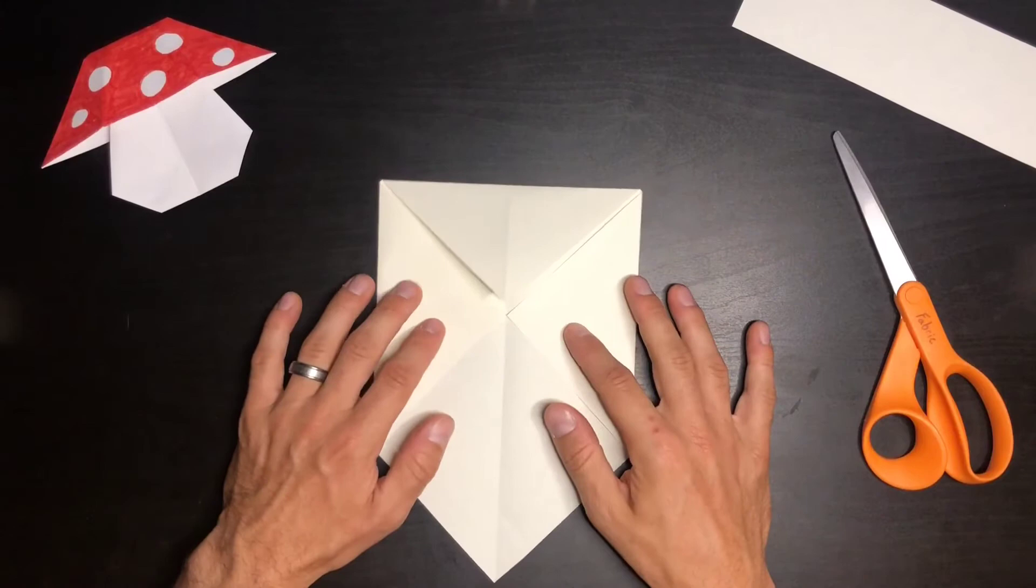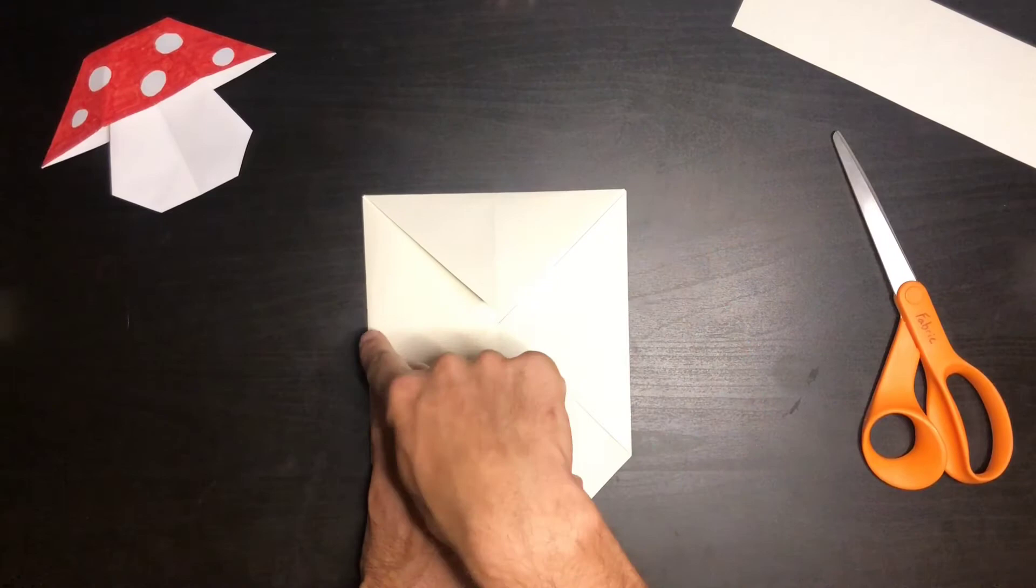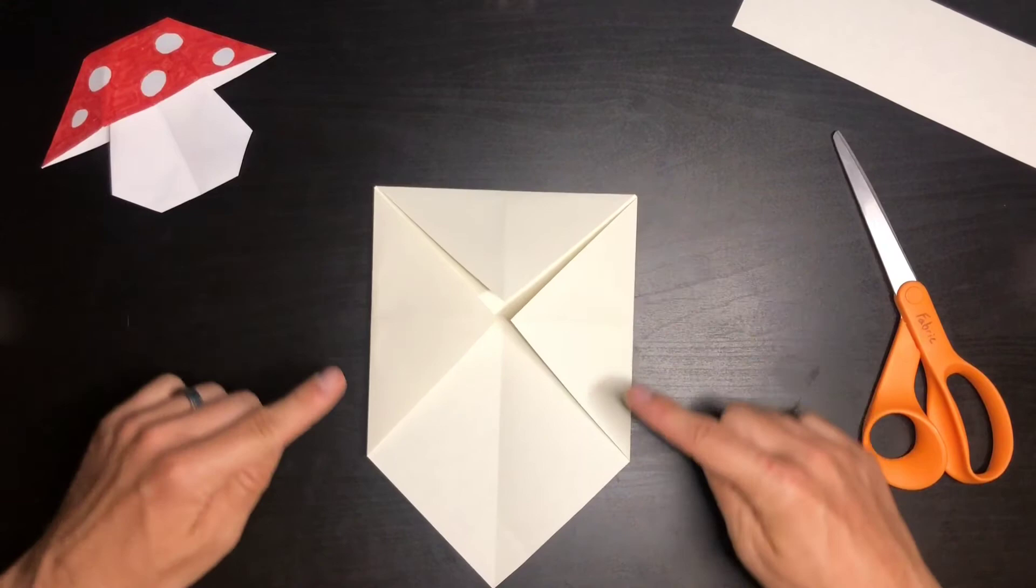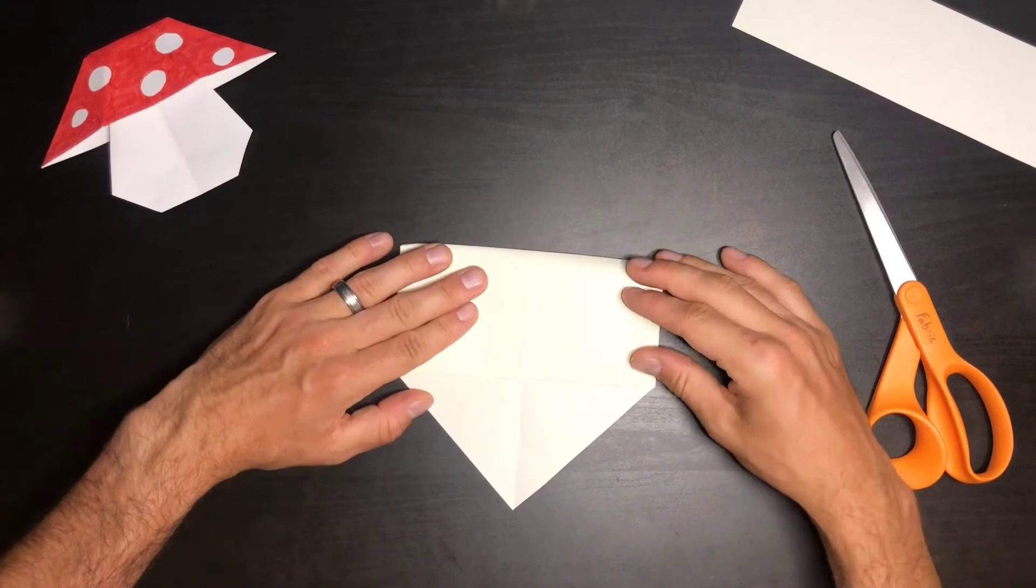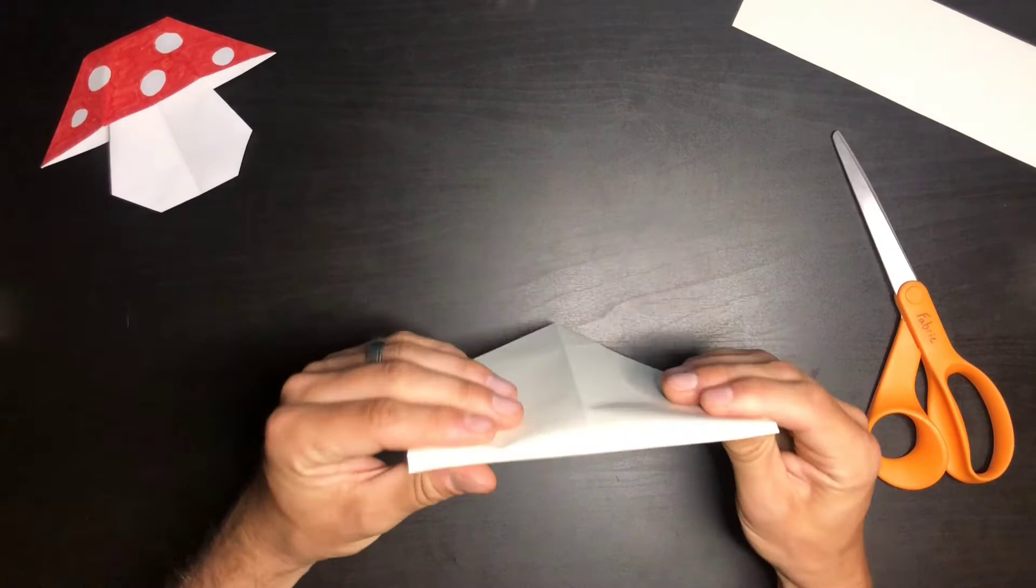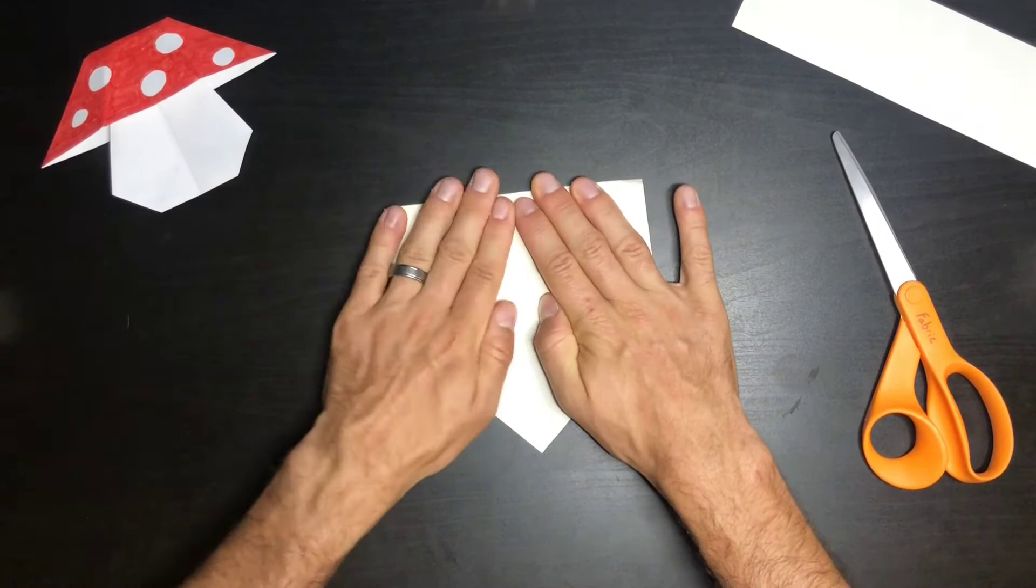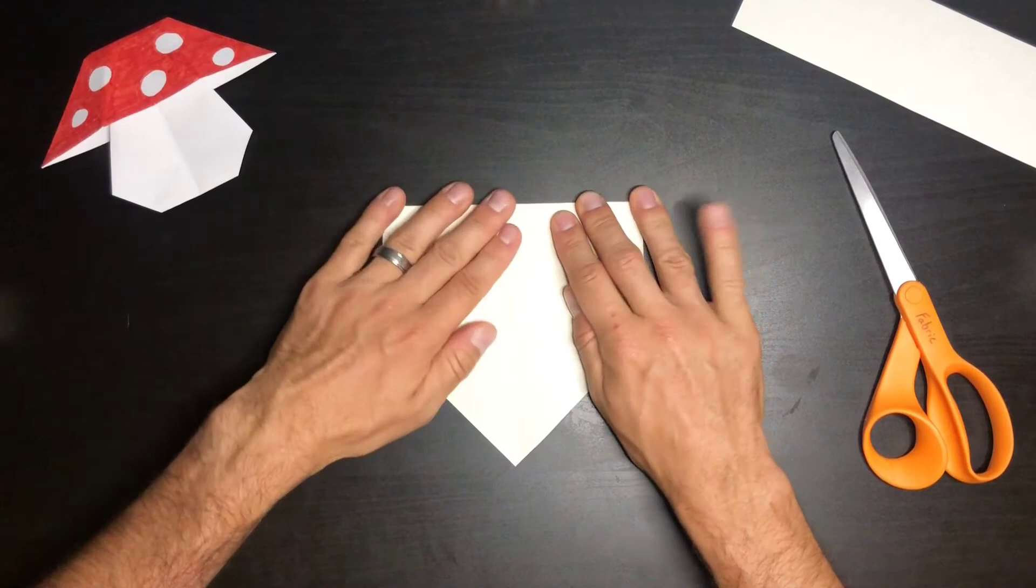So once you get to this point, we have this seam now that goes across here. We're going to fold it on that seam or crease. And so these corners are down to this corner. Get the paper inside there. Fold it on that crease. And since it's already creased, it should fold pretty easily on that. Make sure you press all those creases nice and tight. Wonderful.